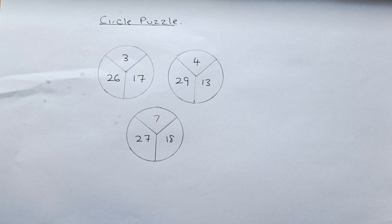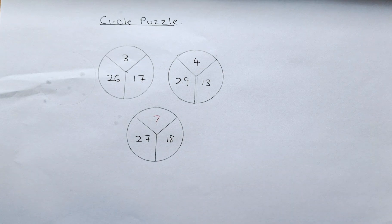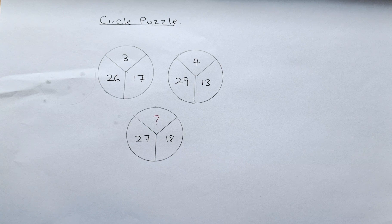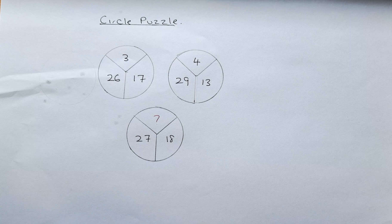So we'll try divide. When you divide 26 by 17 or 29 by 13 and 27 by 18, it really doesn't make any sense and it'll come to not a whole number. So we try subtracting.